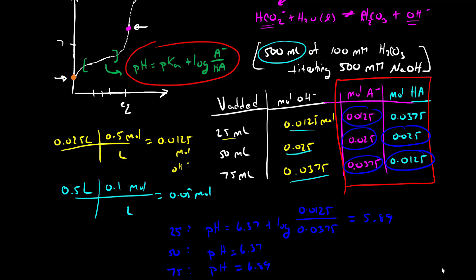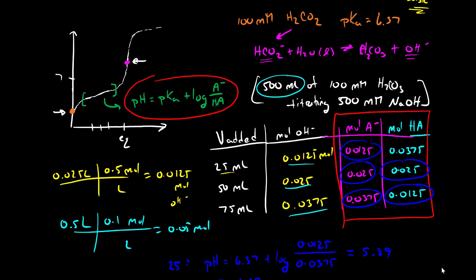In the next video, we will look at the profile of these titration curves — the shape of these curves — and figure out how they change as the acid changes. For example, how would it look if this was acetic acid instead of carbonic acid, or hydrofluoric acid instead of carbonic acid?